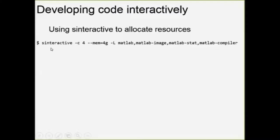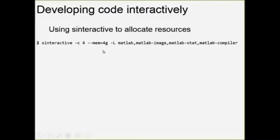Once you have your SSH session started, you type a command to ask for resources. Slurm — Simple Linux Utility for Resource Management — is the batch processing system. Sinteractive is the command to allocate an interactive session. With arguments like '-c 4' for four CPUs, '--mem=4G' for four gigabytes of memory, and then '-L' with MATLAB license names, you can request what you need. When you run the example I'll give you later today, that list of licenses is what you'll need to make it run appropriately. These slides will be online.